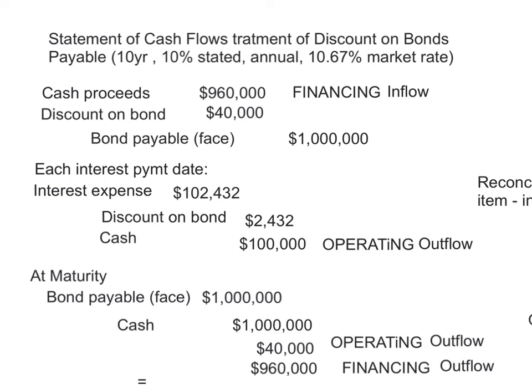When doing the statement of cash flows using the indirect method, you have to make an adjustment for the discount piece. You'll notice this in your homework, where you put it back in as a reconciling item, because your interest expense in the income statement would be higher than the actual cash paid out during the period.